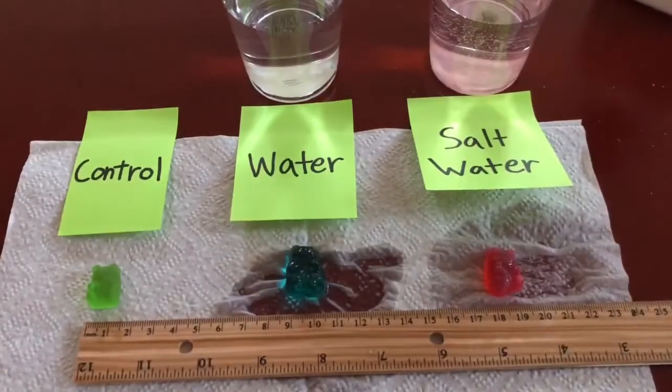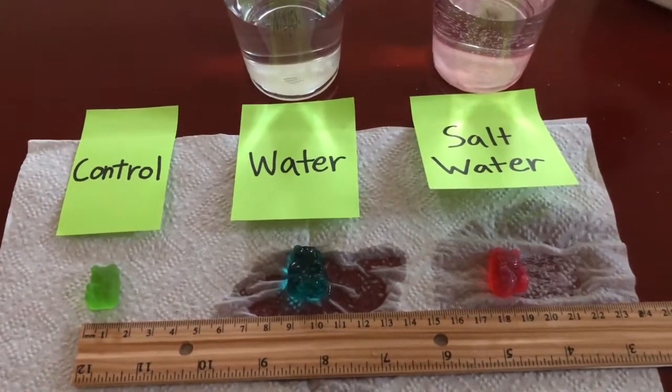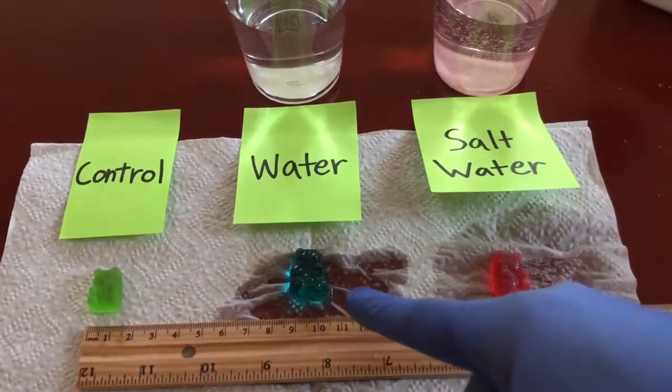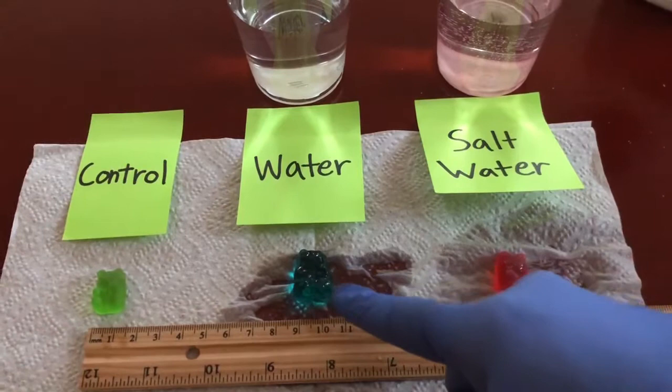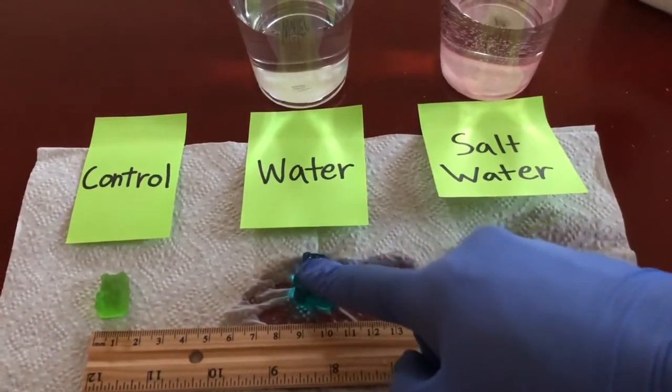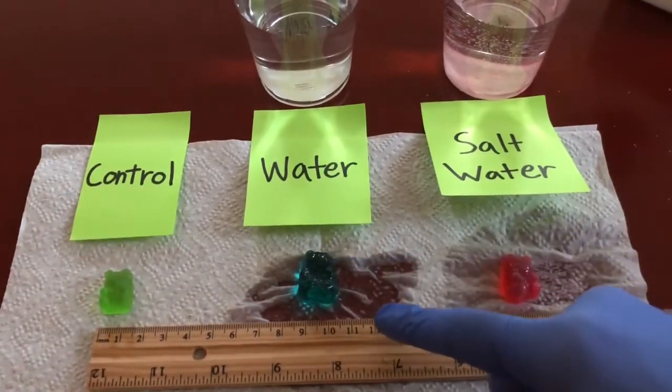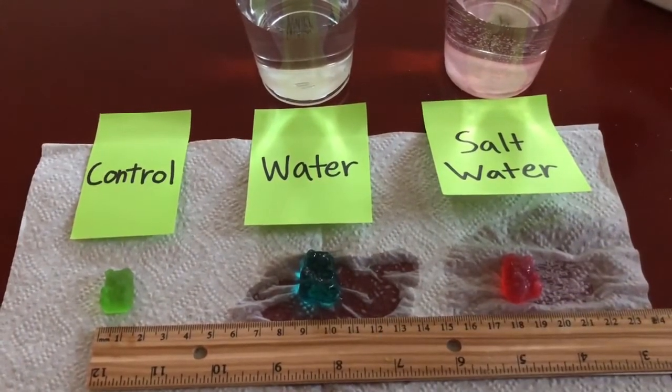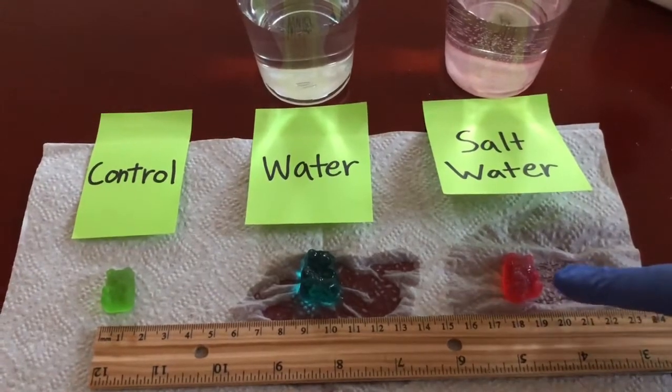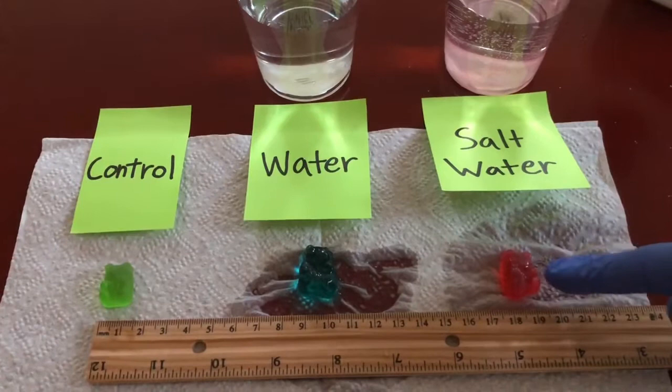Okay, so after six hours I pulled out the two gummy bears from each cup. As you can see, the gummy bear that was submerged in the water is noticeably bigger and just from touching it, it's a lot more squishier and softer. That's because of the water that went inside the gummy bear. The gummy bear that was submerged in salt water shrank a little bit and just from touching it, it's a lot firmer than before.